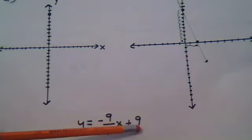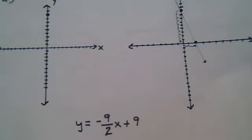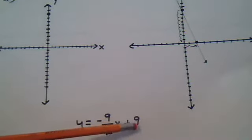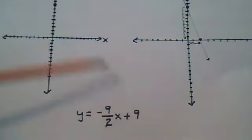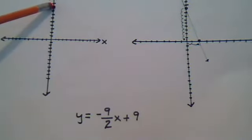So you first plot the first point using the y-intercept. Y-intercept means the point on the y-axis. So they're telling us where this point is. That's y equals 9. So you move up to 9.